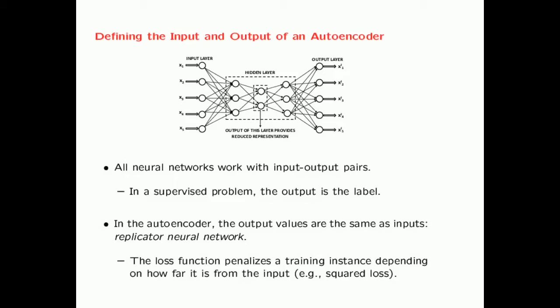I have shown a figure of an autoencoder here which has three hidden layers. It has an input layer and an output layer with exactly the same number of dimensions, so the outputs need to be exactly the same as the inputs. Typically, you will penalize each training instance depending on how far it is from the input — x1 prime needs to be the same as x1. The loss function, a squared loss function, will take the difference of the two, square them, and add it up over all the outputs.